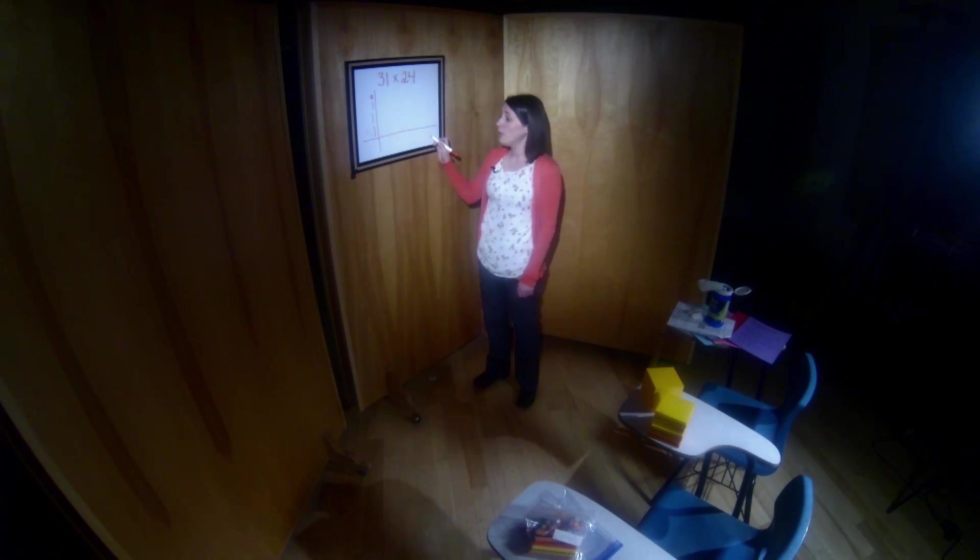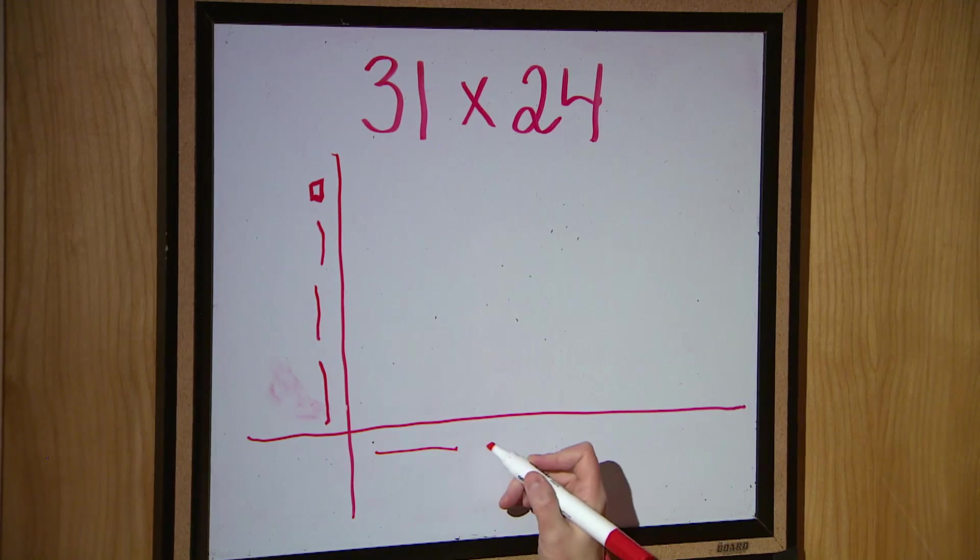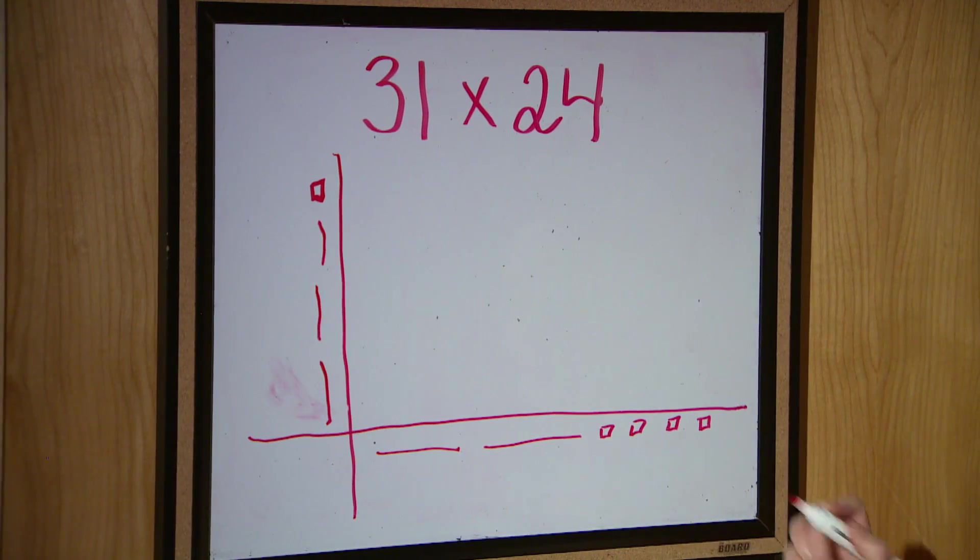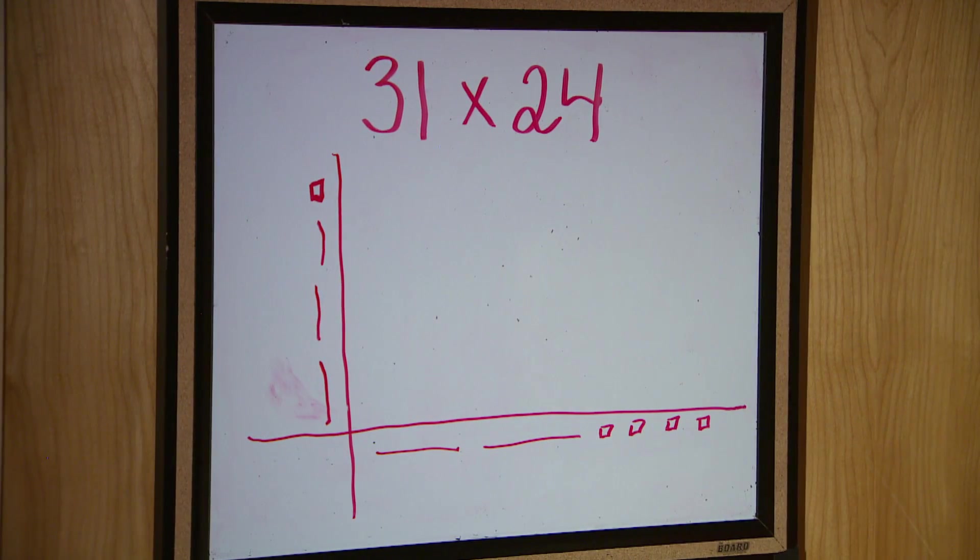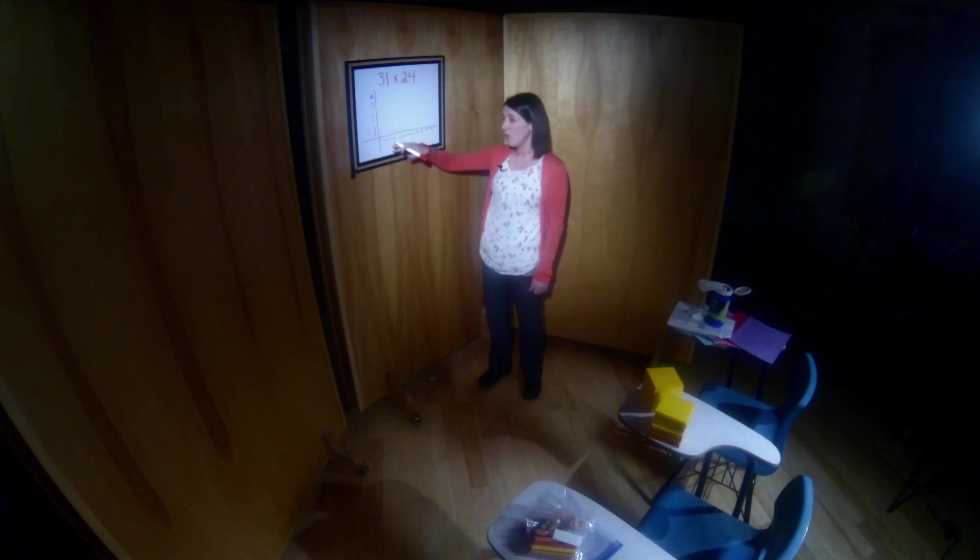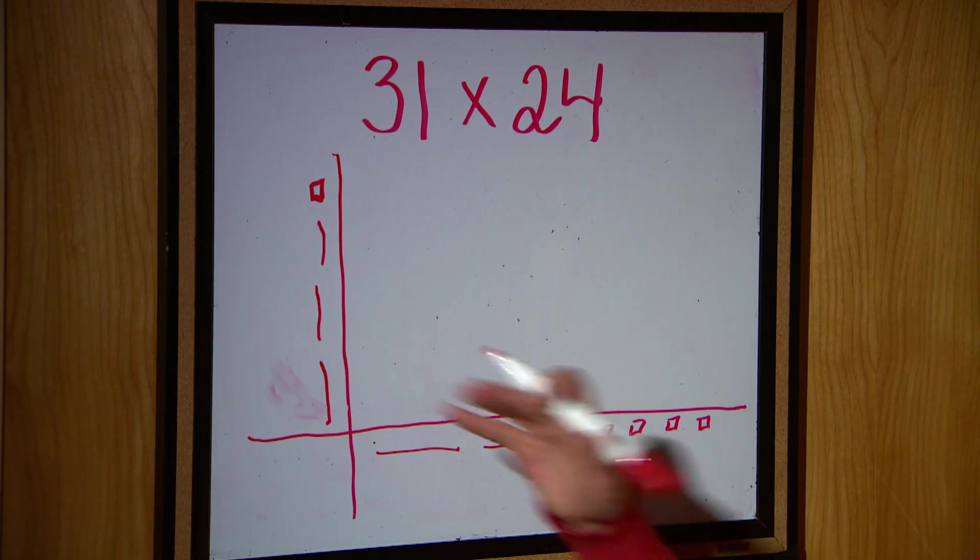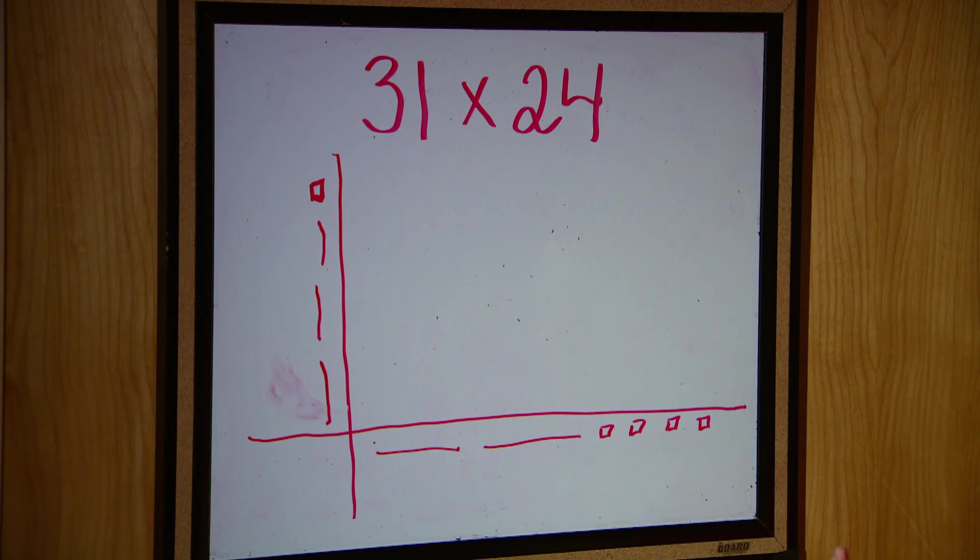Now I'll do the same thing down here with 24: 10, 20, and then my 4 units. Here's what we have to do. We have to say, what is a rod multiplied by a rod? So for people at home, you can think of it as what is 10 groups of 10, or 10 times 10?